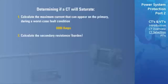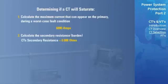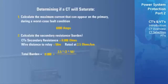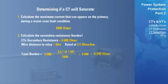Next, we will calculate the secondary resistance, or burden, using the stats provided. The phase CT's secondary resistance, that is the resistance of the windings on the CT, is equal to 0.088 ohms. The length of each wire from the CT to the relay is 50 meters and has a rated resistance of 2.5 ohms per kilometer. The total burden is equal to the CT secondary resistance of 0.088, plus 2 times the lead length of 50 meters multiplied by the lead resistance of 2.5 ohms per kilometer and then divided by 1,000 meters, added to the relay burden of 0.008 ohms, resulting in a total burden of 0.346 ohms.